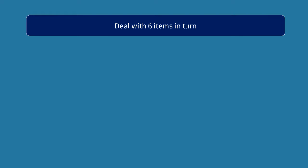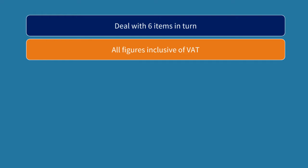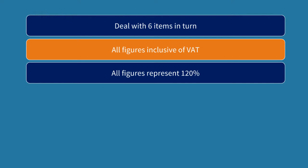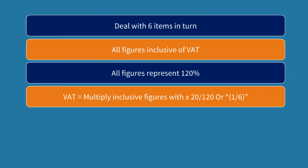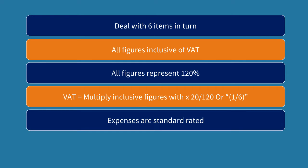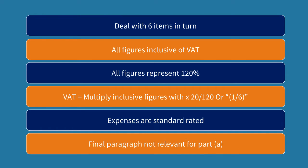So now we need to read the information in the question. As expected we can see six items listed so we will deal with each in turn. It is always worth scanning below the sixth point to see if there are any notes to help us. We can see that all the figures in notes one to six are inclusive of VAT, meaning they represent 120%. So to calculate the VAT at 20% we need to multiply the relevant numbers by 20 divided by 120, or one sixth. We're also told that the expenses are standard rated so we don't need to worry about whether items are zero rated or exempt.